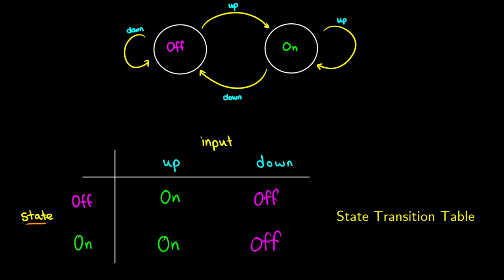For a deterministic finite state machine or finite state automaton, all of these states and inputs need to give one output. So off and up has to do one thing, off and down has to do one thing, on and up has to do one thing, and on and down has to do one thing.